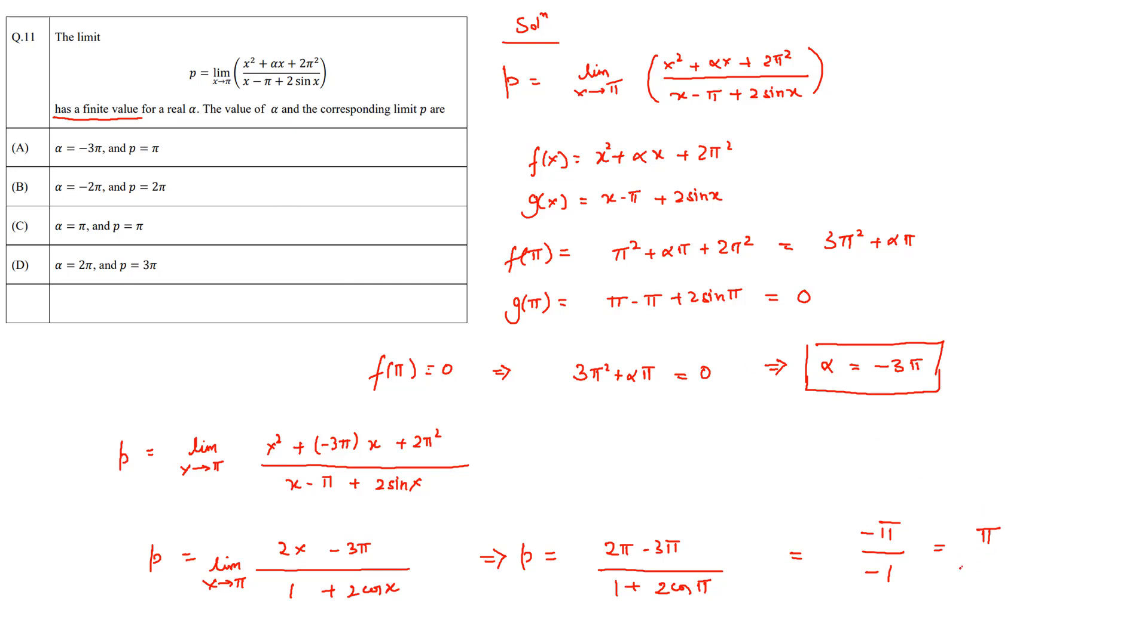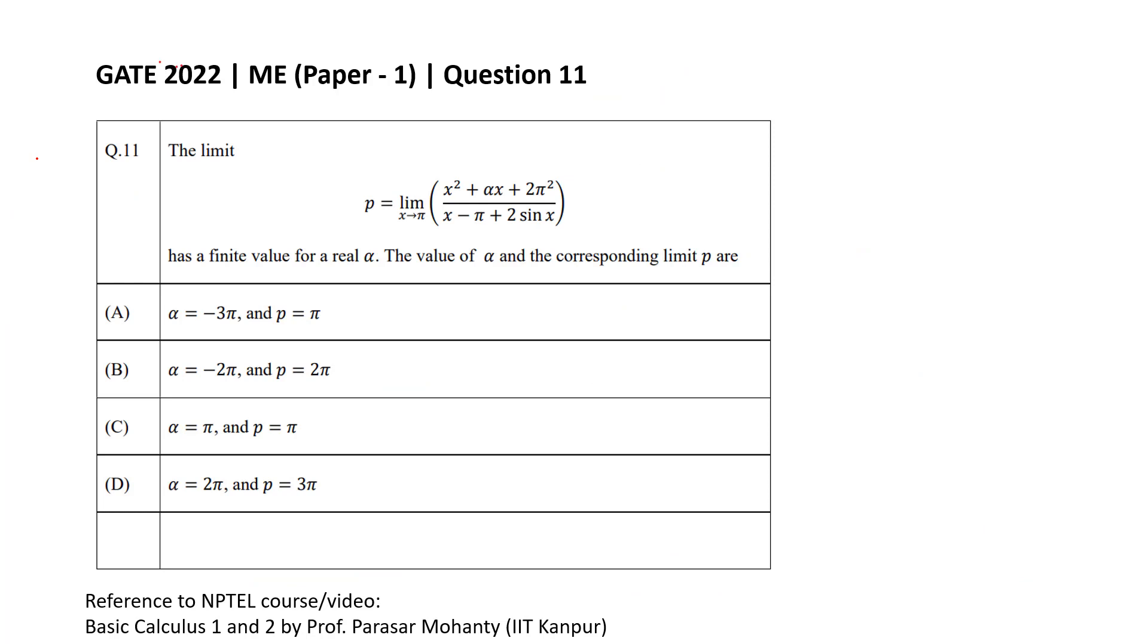p equals pi and alpha equals minus 3 pi, so option A is correct. We solved this question and the correct option is A. In order to know more about limits, you can refer to this NPTEL course of Basic Calculus 1 and 2 by Professor Mohati of IIT Guwahati.